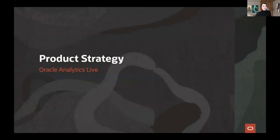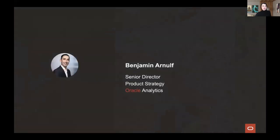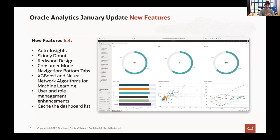The product strategy update — passing it over to Ben. We had the January update for Oracle Analytics Cloud 6.4. We have Auto Insights, and Alexandria is going to do a demo of Auto Insights today, so stay tuned.